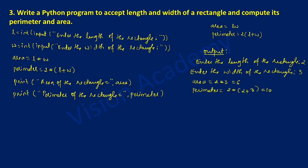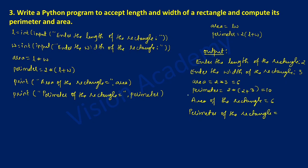After that it is going to print: area of the rectangle is equal to — and the area variable is holding the value 6, so 6 will be printed. The next print statement prints: perimeter of the rectangle is equal to — and the value stored in perimeter is 10, so 10 will be printed. Now it is time to execute this program.